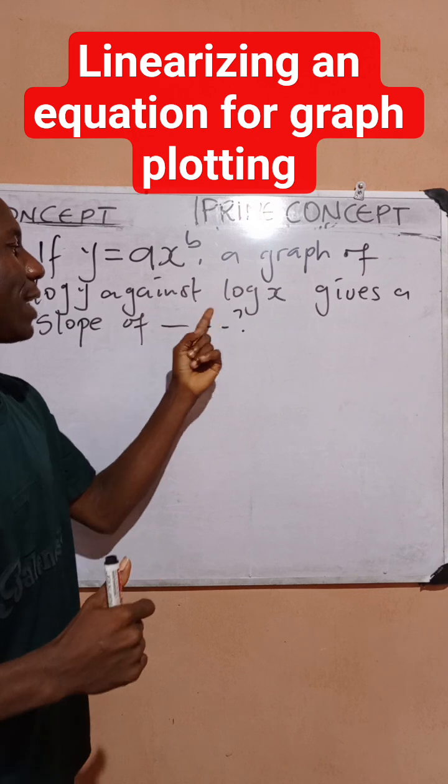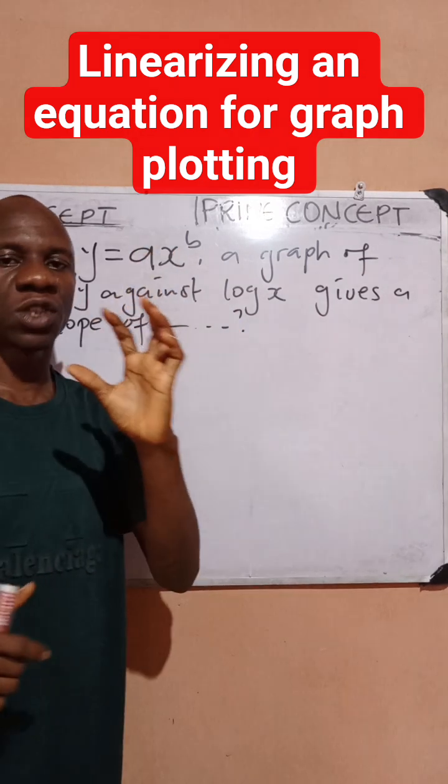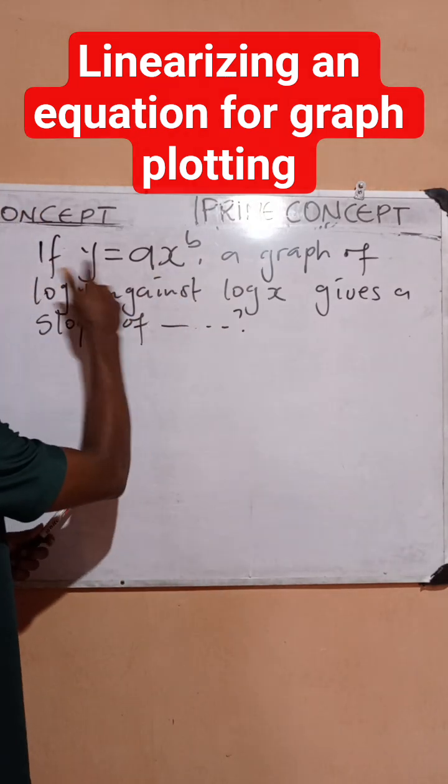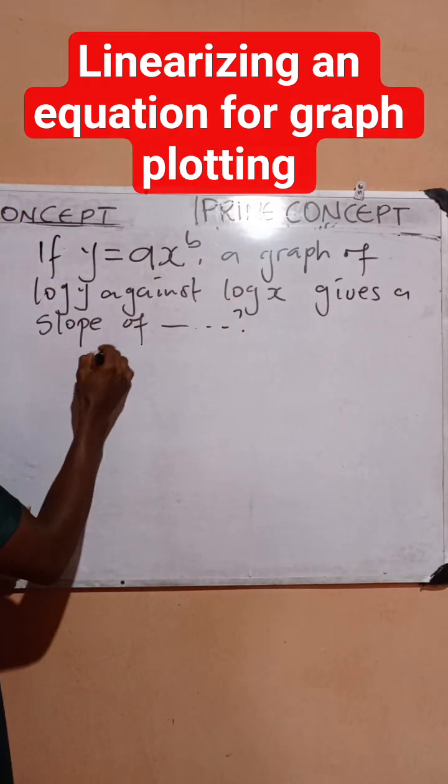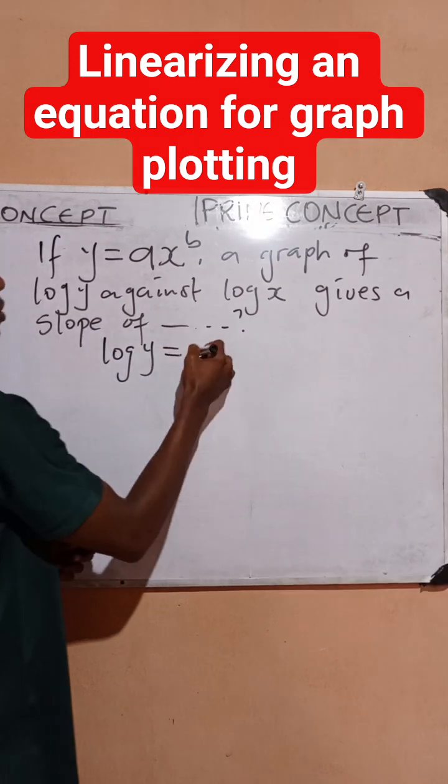When you plot a graph of log y against log x from this particular equation, what will the slope represent? So quickly, we want to take log of both sides of this equation. So I have log y equals log...